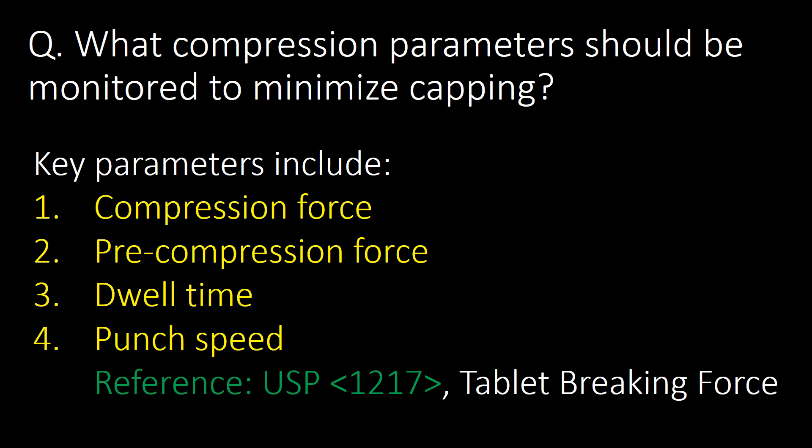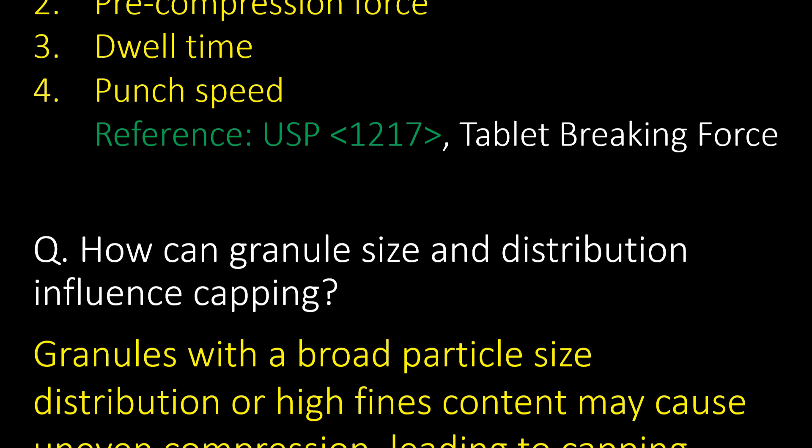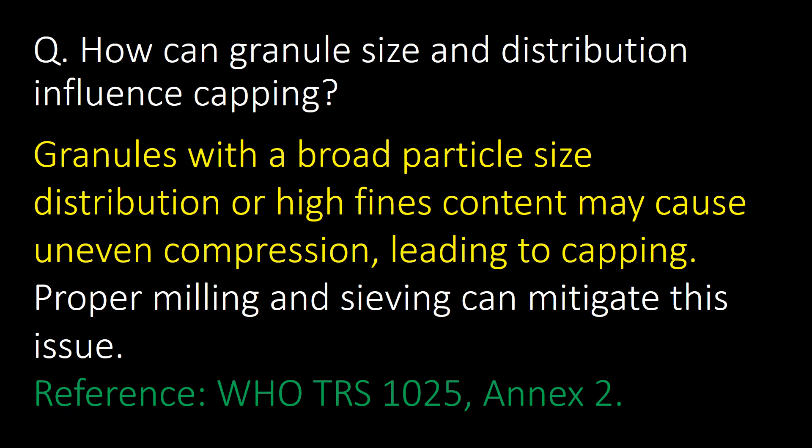What compression parameters should be monitored to minimize capping? Here is a list of 4 key compression parameters: 1st, compression force; 2nd, pre-compression force; 3rd, dwell time; and 4th, punch speed. Reference: USP Chapter No. 1217.